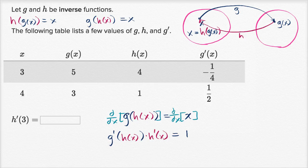Or we could just rewrite it this way. We could rewrite that h prime of x is equal to one over g prime of h of x.